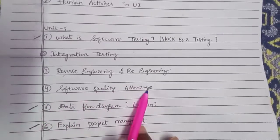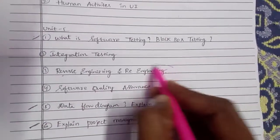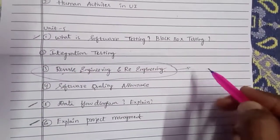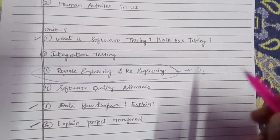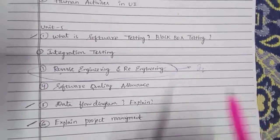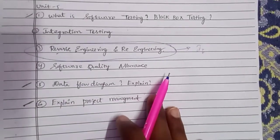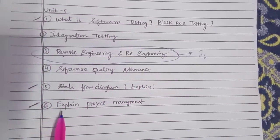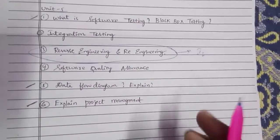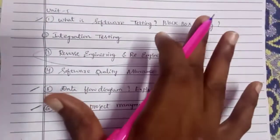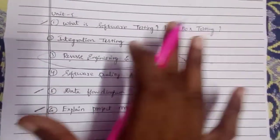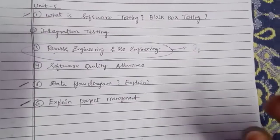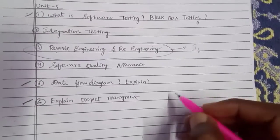Unit 5 is very important: software testing, black box testing, integration testing, reverse engineering, re-engineering, and software quality assurance. Interview questions are very important, so choose topics like software quality assurance, data flow diagrams, and project management — these are all important questions in software engineering.